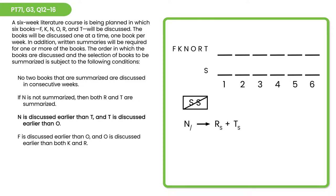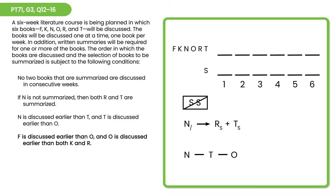The third rule tells us that if N is discussed earlier than T, and T is discussed earlier than O — that's a relative string N preceding T preceding O — we can set them up in a partial tree. The fourth rule tells us F is discussed earlier than O, and O is discussed earlier than both K and R. This fleshes out the rest of our tree, and now all six players are contained within it.